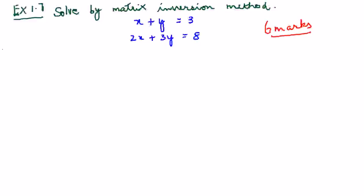Example 1.7 is a 6 mark question. It is to solve the two equations x plus y equals 3 and 2x plus 3y equals 8 by matrix inversion method.